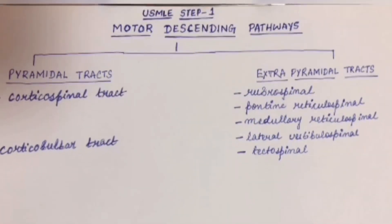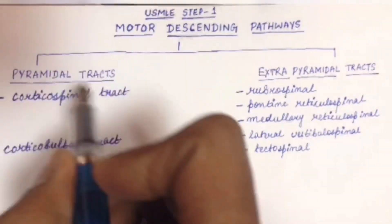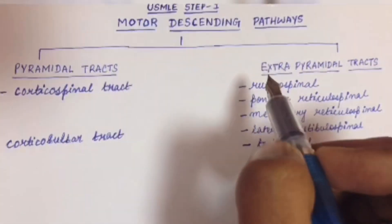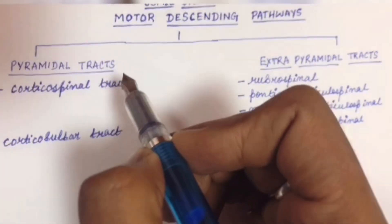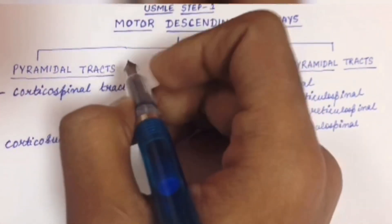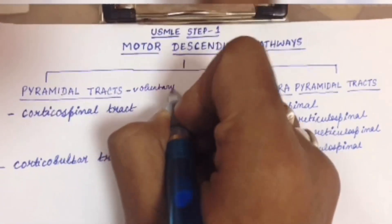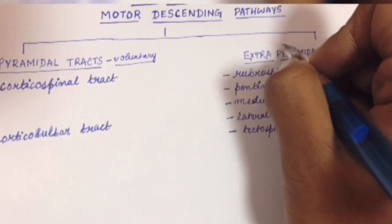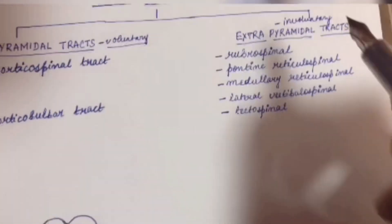Hello guys, welcome to my channel Medistap Educations. Today we are going to discuss pyramidal tracts and extrapyramidal tracts. Both pyramidal and extrapyramidal tracts are part of motor descending pathways, but the main difference is that pyramidal tracts control voluntary movements while the extrapyramidal tracts control involuntary movements.